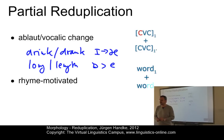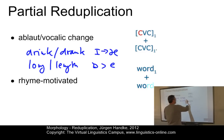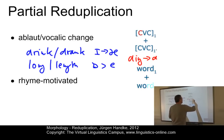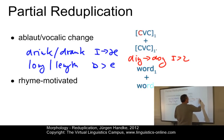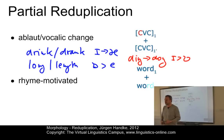The ablaut type of reduplication does not involve any grammatical changes in present-day English. It changes just the stressed vowel of the base while the rest of the word is simply repeated. An example in reduplication would be ding-dong, where 'e' becomes 'o'. This is a typical example of ablauting in reduplication. Another example would be something like mish-mash.